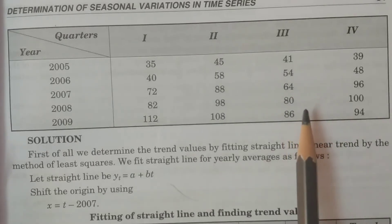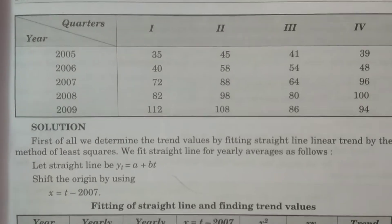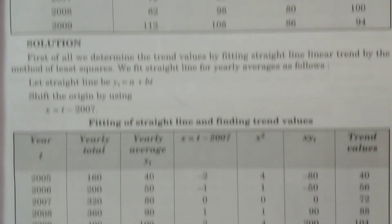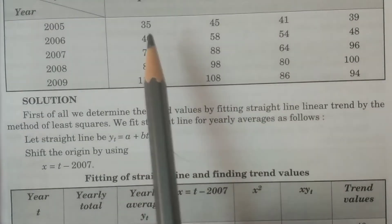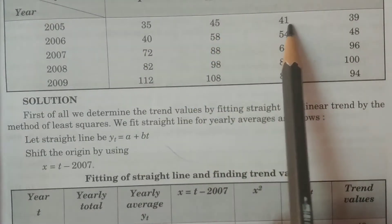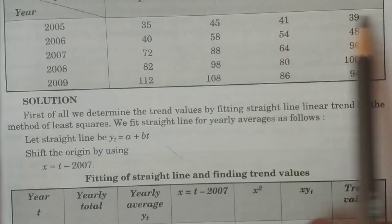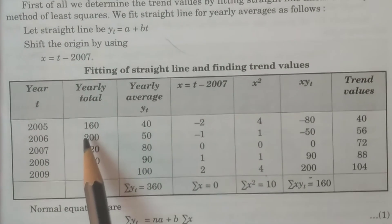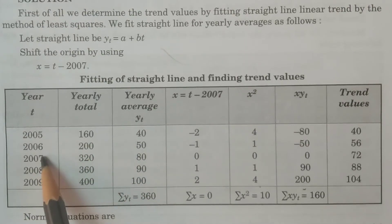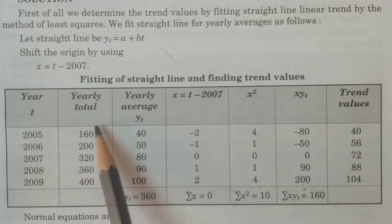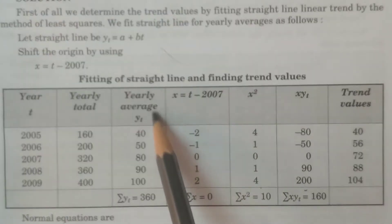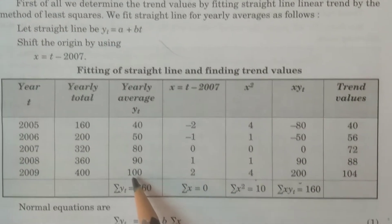Now what you have to do is, first of all, sum up the data. You can see how the data is going to be summed up: 35 plus 45 plus 41 plus 39. The yearly data for 2005 is 160. Like that, for all years, we have to get the total yearly data and then calculate the yearly average.